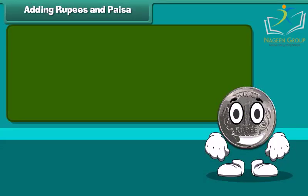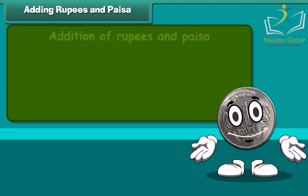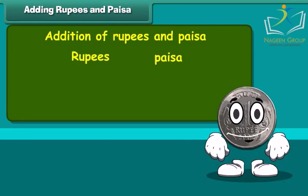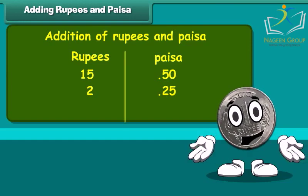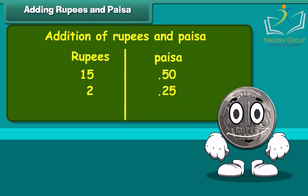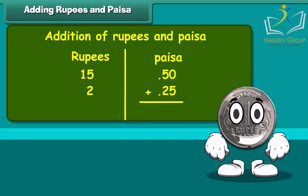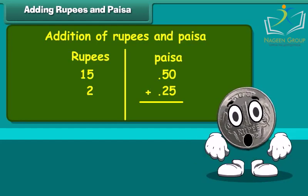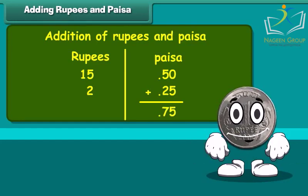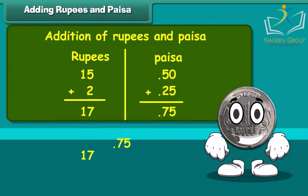Adding rupees and paisa. Let us learn addition of rupees and paisa. Add 15 rupees 50 paisa and 2 rupees 25 paisa. Write the amount in two separate columns of rupees and paisa. First, add numbers in the paisa column: 50 plus 25 paisa is equal to 75 paisa. Now add numbers in the rupees column: 15 plus 2 is 17. Therefore, the sum is 17 rupees and 75 paisa.